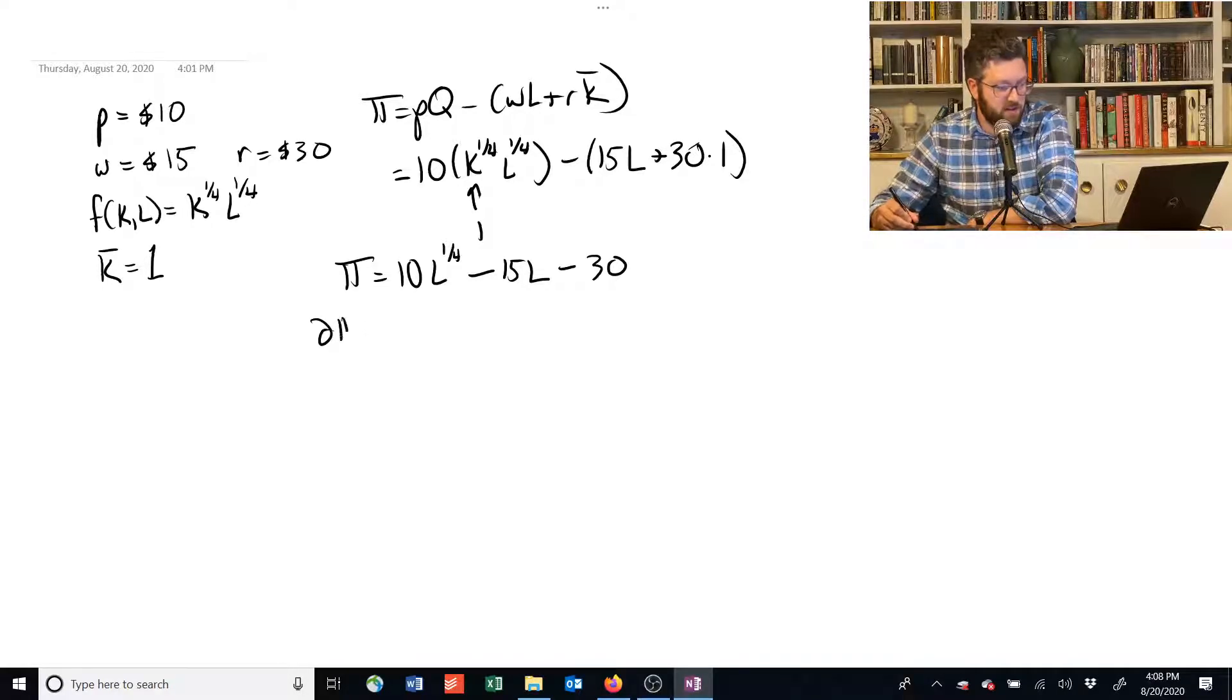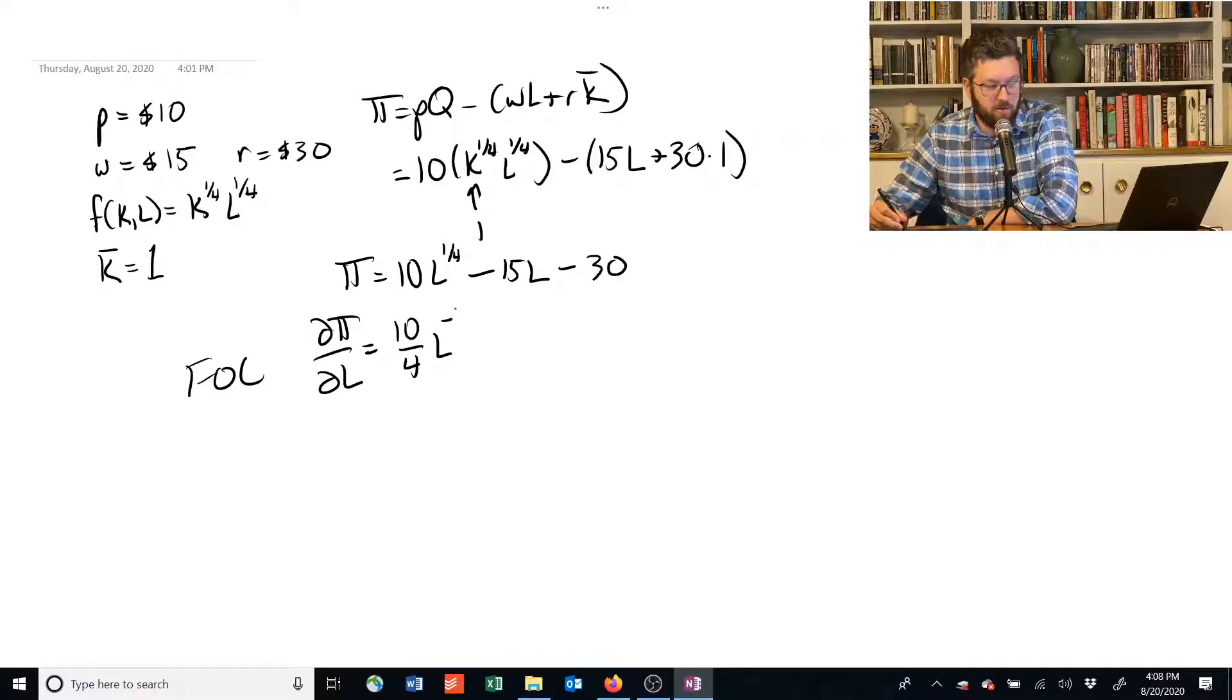Let's take the derivative with respect to labor to get our first order condition. Okay? 10 times L to the 1/4, we've got to take the derivative of that. We bring the 1/4 down, 10 over 4, times L raised to the power of negative 3/4, because we have to sacrifice 1 from that when we take the derivative.